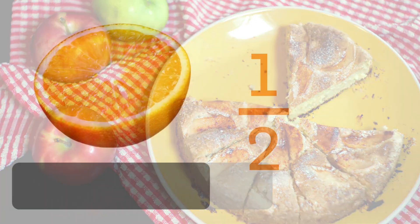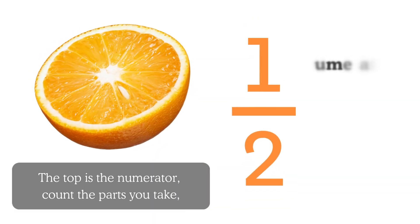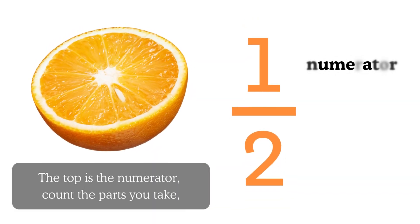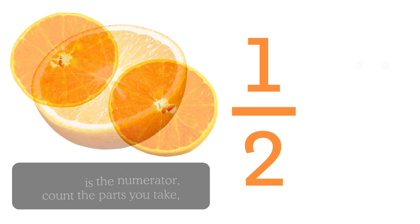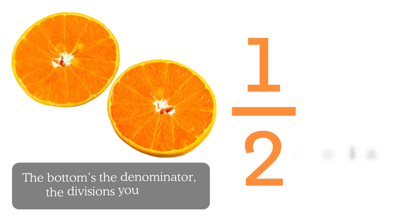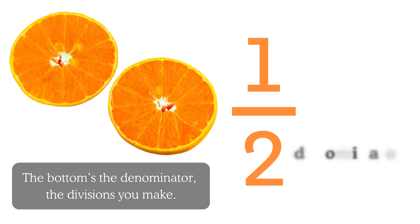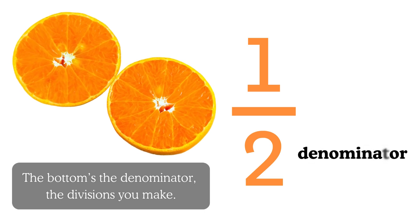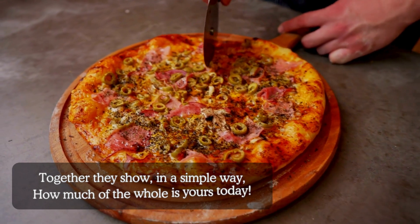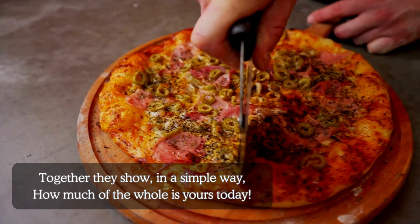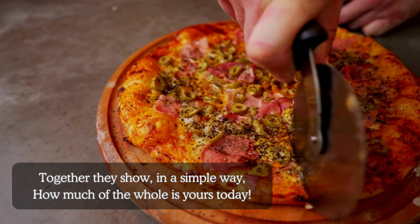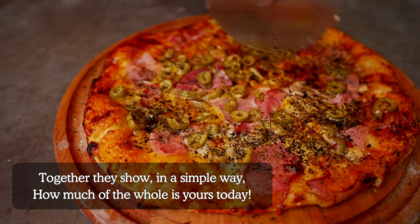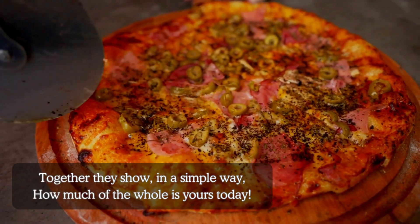The top is the numerator, count the parts you take. The bottom's the denominator, the divisions you make. Together they show in a simple way how much of the whole is yours today.